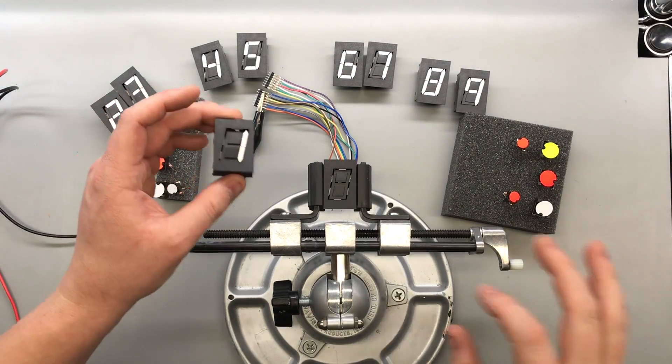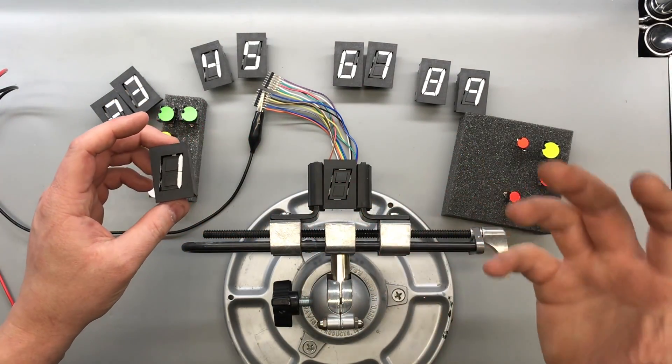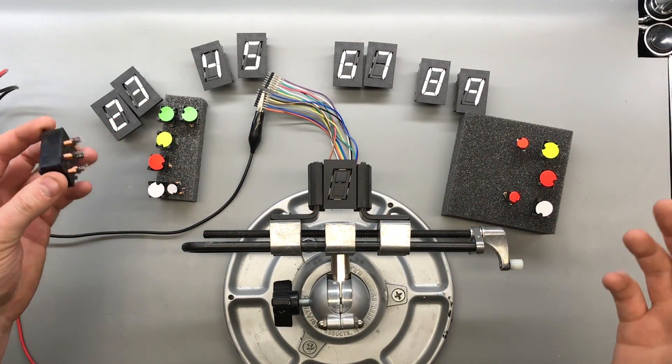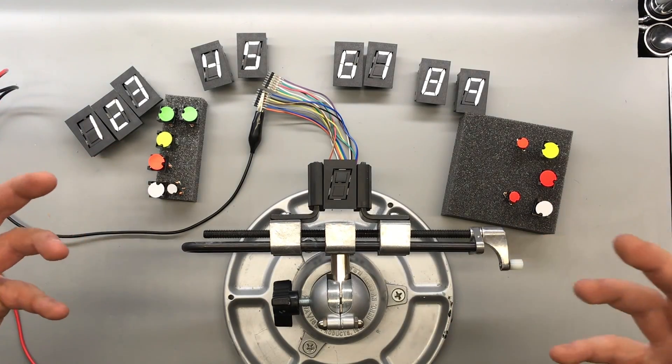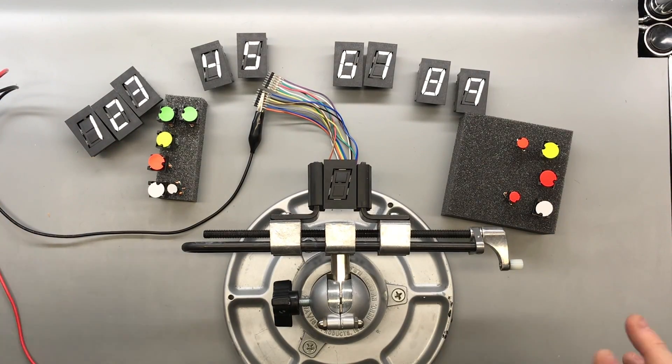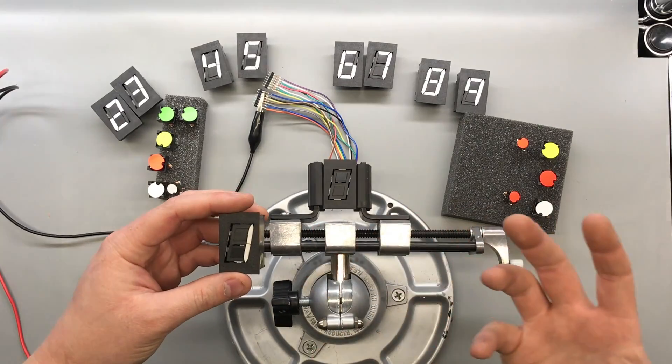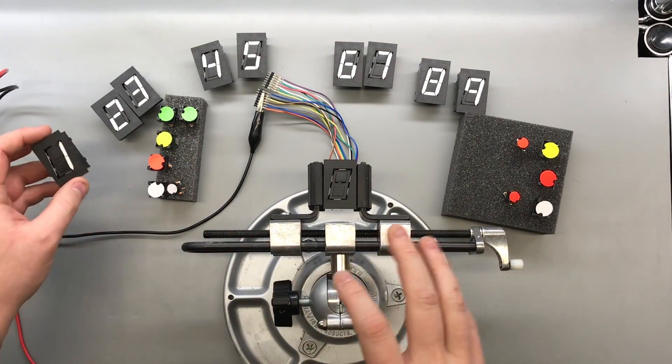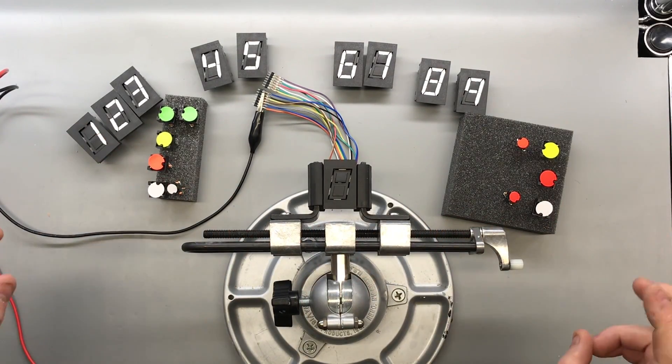And these electromechanical seven segment displays are used in all the gas pumps and sometimes bus signs and other signage where if the power is lost the digits still retain their memory, so to speak.